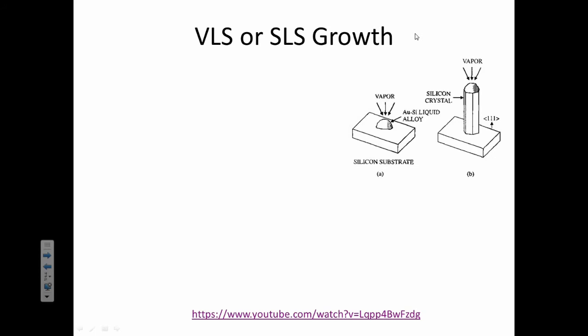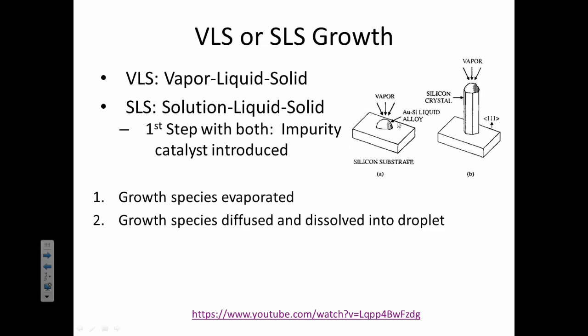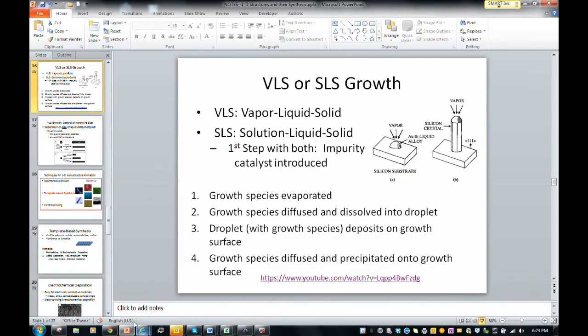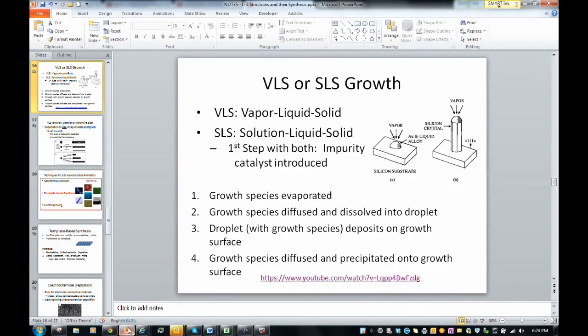Here's the method that they're really talking about. It's called vapor liquid solid or solution liquid solid. In both of these, you basically start with an impurity that you put on some sort of a substrate. Then you evaporate something you're interested in so that it's basically attracted to this tiny little drop. It grows and grows as this particular species deposits onto that surface. Here's a basic animation showing this. You can see all these red particles are attracted to this yellow drop. It's actually growing from the bottom up and forms this nanostructure.